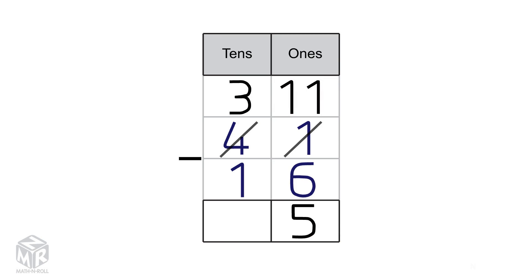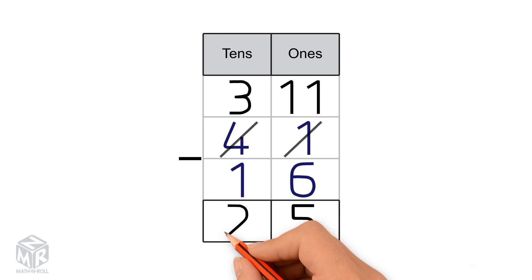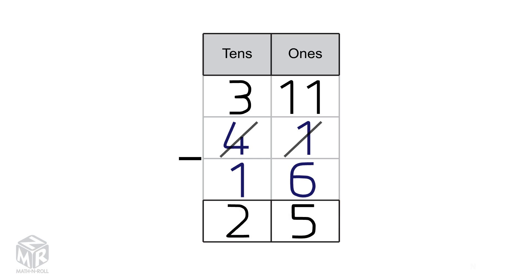Now we subtract the 10s: 3 minus 1 equals 2. So 41 minus 16 equals 25.